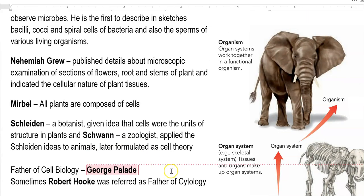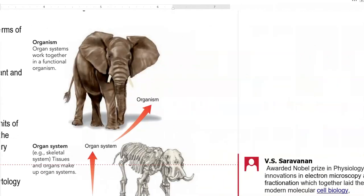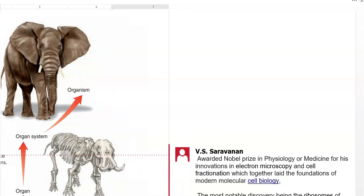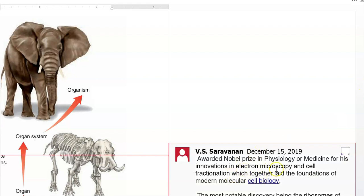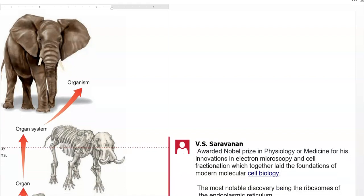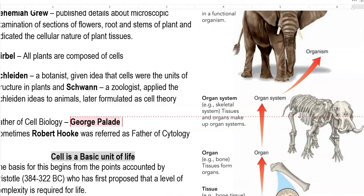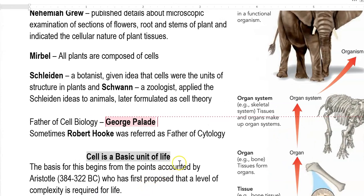The next is George Palade, who is referred to as the father of cell biology. George Palade was awarded the Nobel Prize in Physiology and Medicine for his innovations in electron microscopy and cell fractionation technique. Both of these form the basic foundation for modern molecular biology and cell biology, which is why he was awarded the Nobel Prize and is also referred to as the father of cytology.